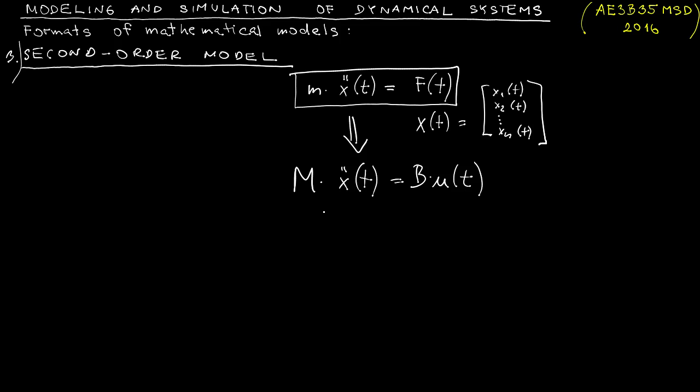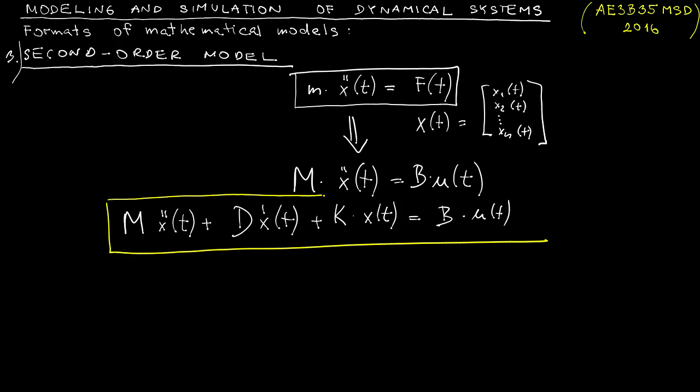In fact, we can make it even more general by considering also the terms corresponding to the first derivative, that means damping, and the term corresponding to zero derivative, corresponding to stiffness. On the right hand side we have a matrix B, which selects or assigns the individual external forces to the masses. Now all the coefficients M, D, and K are matrices. Once again x and u are vectors.